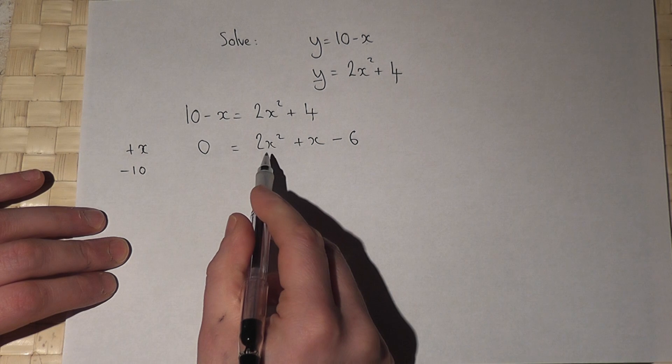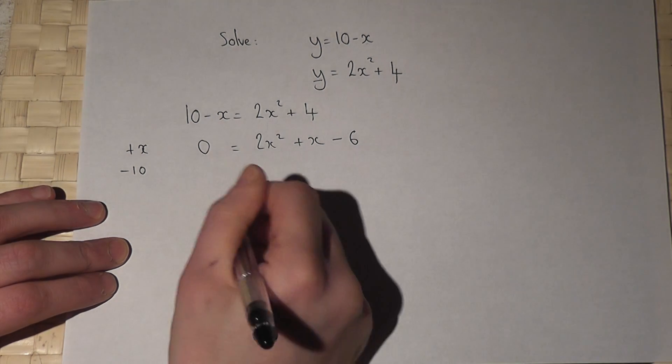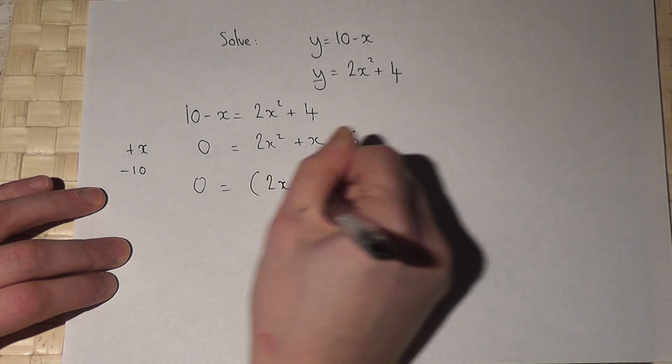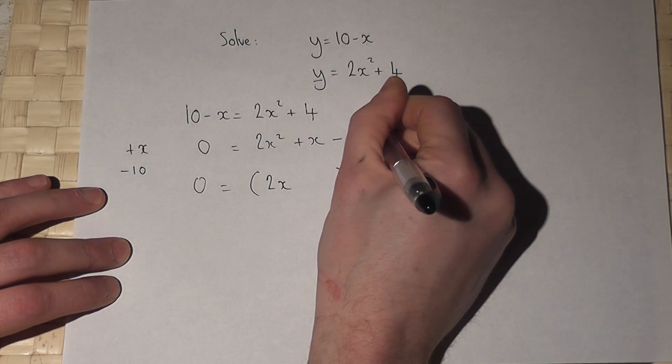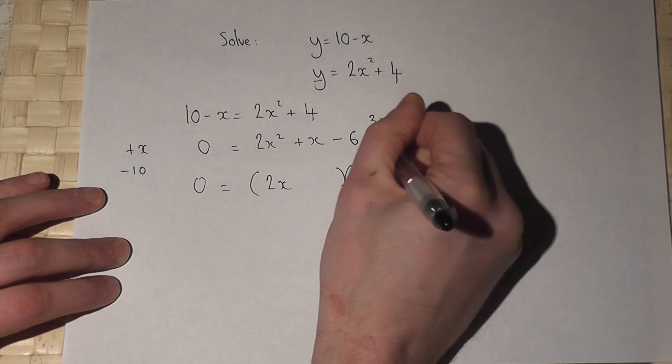So the question is, does this factorize? Well, if I were to put 2x and an x, then the factors of 6 are 3 and 2. So it's 3 times minus 2, maybe, or minus 3 times 2.